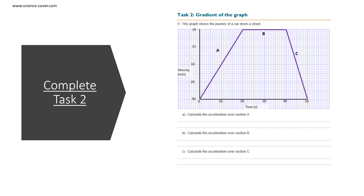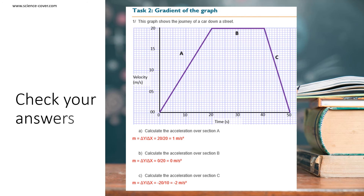Complete task 2. Let's check our answers. The acceleration over section A is 1 meter per second squared. The acceleration over section B is 0 meters per second squared. And the acceleration over section C is minus 2 meters per second squared.